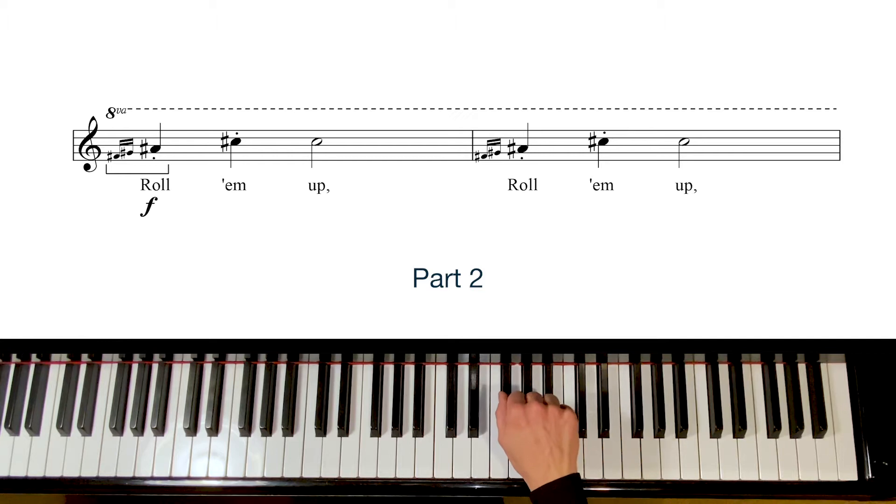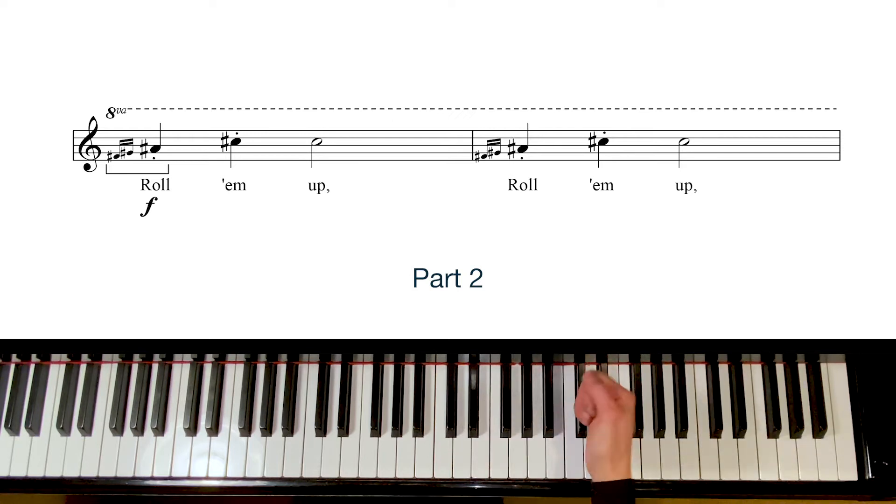In part two you make a fist and play the three black notes, rolling the fist from left to right. Then repeat the bottom of the twos twice using the side of your fist.